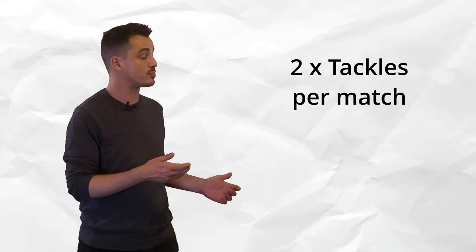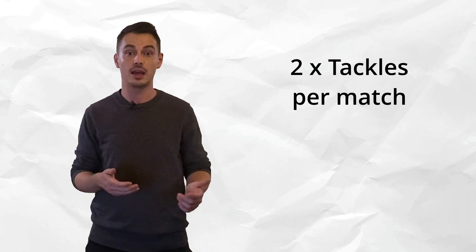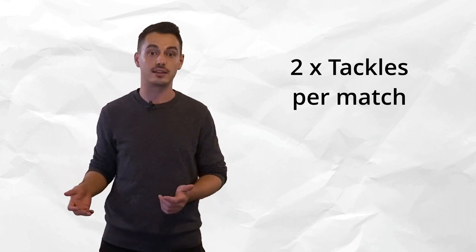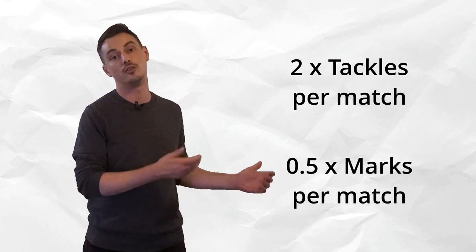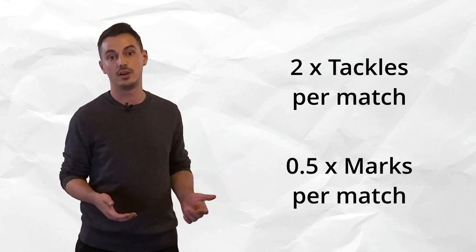We did this for marks and tackles too, and saw a similar increase of two tackles per match. Yet marks didn't go up as dramatically, increasing by only 0.5. So while three extra disposals and a few more tackles and marks doesn't seem like a huge difference at first, when you consider this applies to every player in the AFL, the next question is: is this equally split or not? Who is getting all these extra statistics?